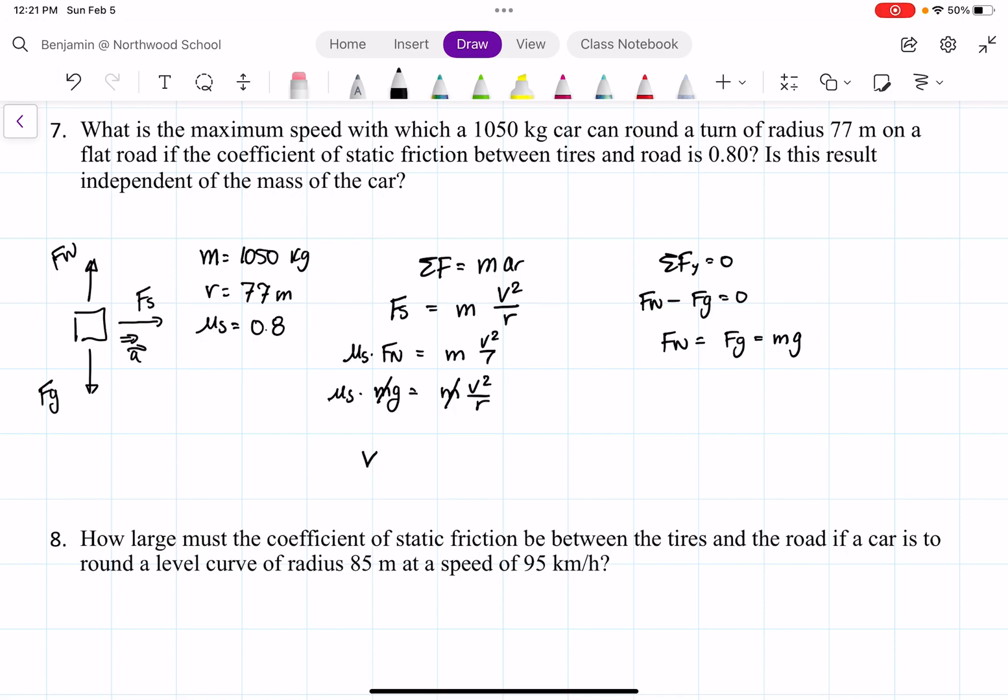We get v squared is equal to r mu s times g. We take the square root, so we get v is equal to the square root of r mu s g.